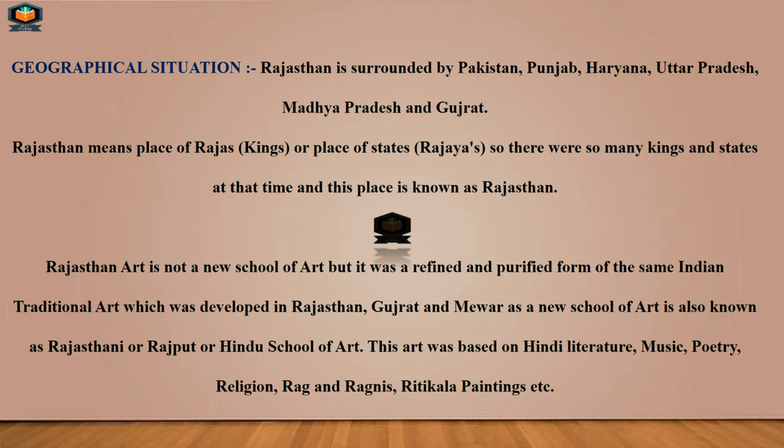Rajasthan means 'place of Rajas,' that means kings, or place of states. There were so many kings and states at that time, and this place came to be known as Rajasthan.